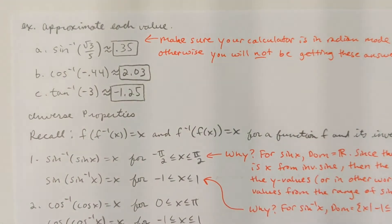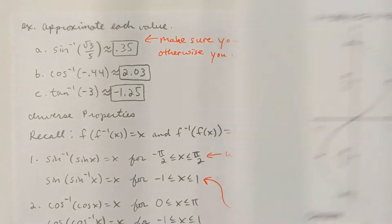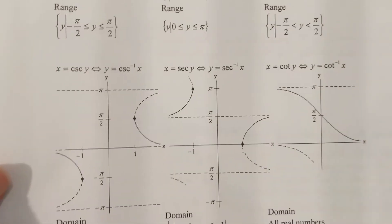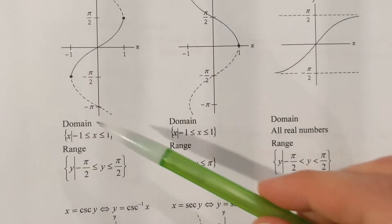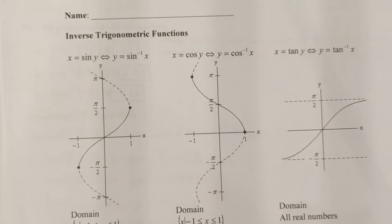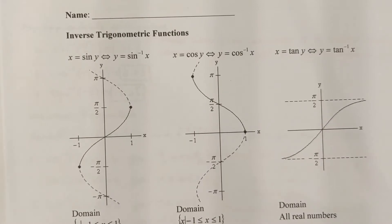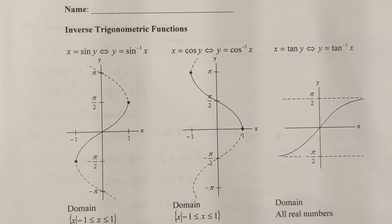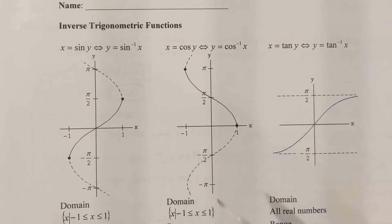I wanted to finish up section 7.1 here. We're talking about the inverse trig functions. I had a sheet here with the graphs of the inverse trig functions, and the domain and the range are also provided there. I'm getting an inverse by simply switching x and y, and if I know the graphs of the original six trig functions, I'm just simply reflecting each one of those about the diagonal line y equals x to get the graph of the inverse.